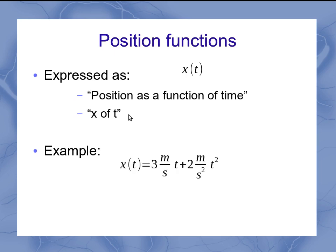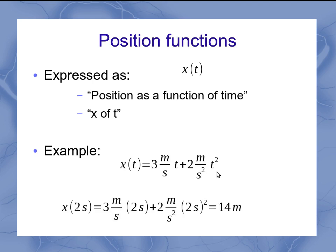Here's an example. The position as a function of time is 3 meters per second multiplied by the time, plus 2 meters per second squared multiplied by time squared. If I were to actually find the position at a specific time, I plug in that value for t into each place that t appears in the equation, multiply it all out, and find out that at 2 seconds, according to this particular equation, I've got a position of 14 meters.